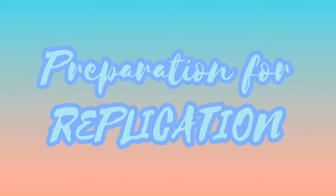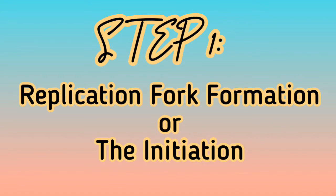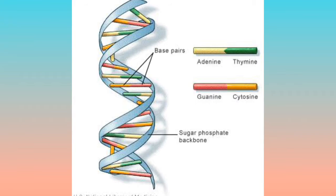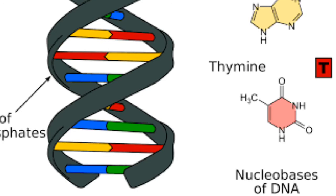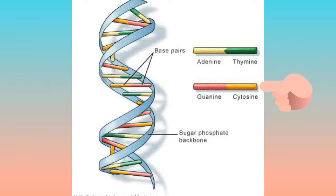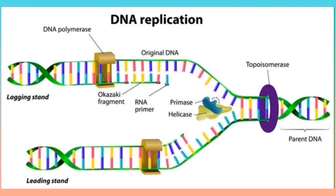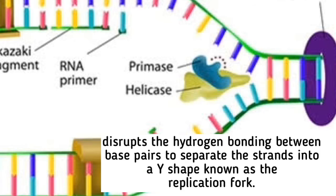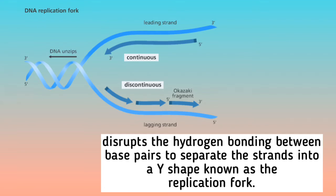Preparation for replication, Step 1: Replication fork formation, or initiation. Before DNA can be replicated, the double-stranded molecule must be unzipped into two single strands. DNA has four bases — adenine, thymine, cytosine, and guanine — that form pairs between the two strands. Adenine only pairs with thymine, and cytosine only binds with guanine. In order to unwind DNA, these interactions between base pairs must be broken. This is performed by an enzyme known as DNA helicase. DNA helicase disrupts the hydrogen bonding between base pairs to separate the strands into a Y-shape known as the replication fork.